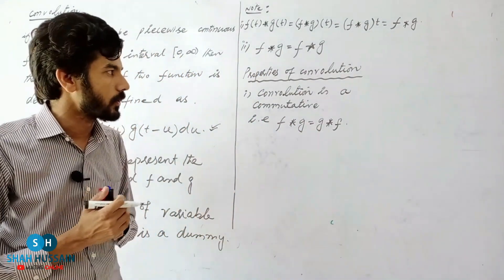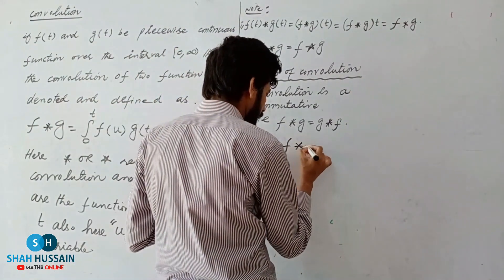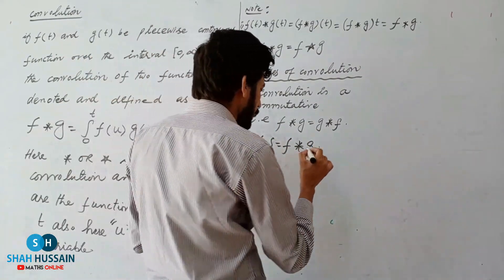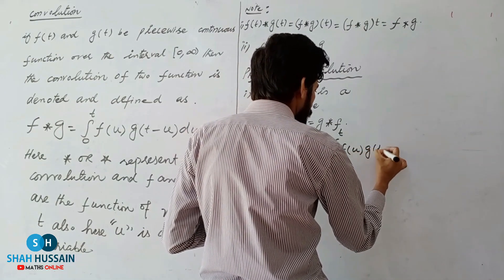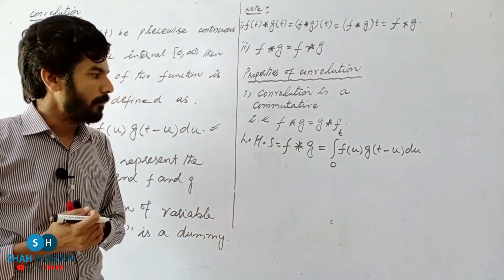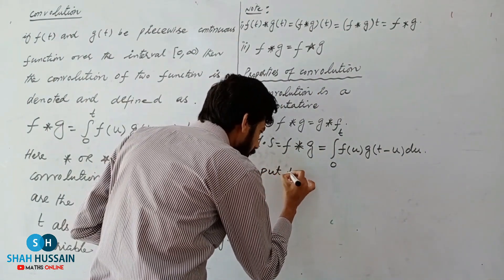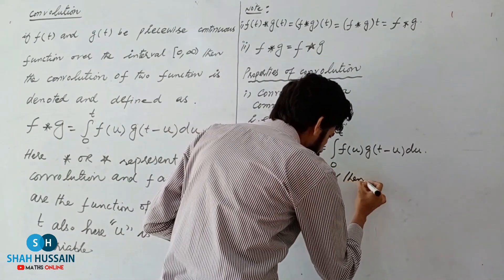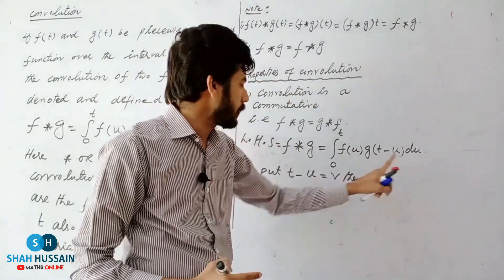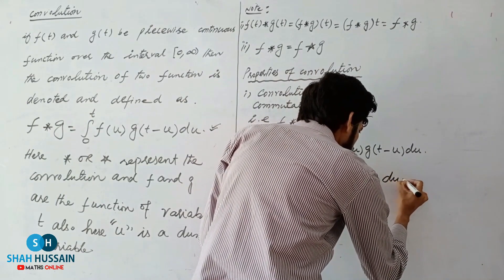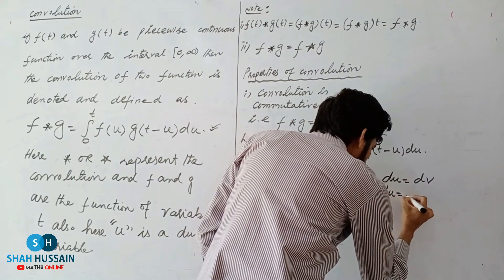To prove this property, first we take the left hand side. Our left hand side is f★g. By the formula, we put in the value: LHS = ∫₀ᵗ f(u) g(t−u) du. Now we do a substitution: we put t−u = v.